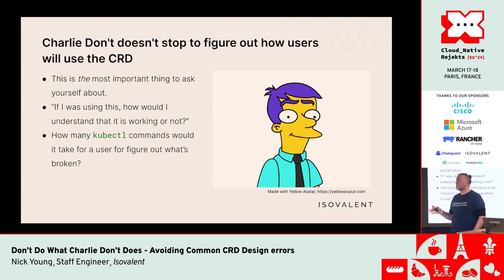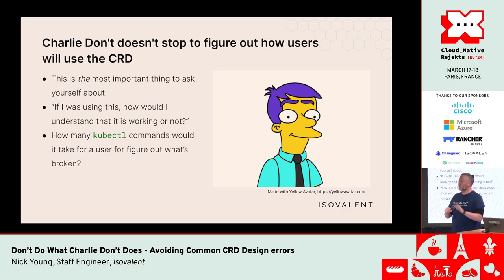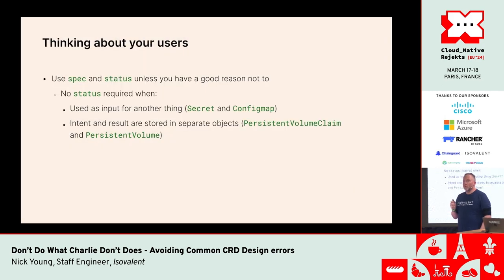Charlie Don't also doesn't stop to figure out how users are going to use the CRD. A CRD is about the people who use it — if it's not easy to use, it won't be used. Key questions: how would a user know if it's working? A useful metric is 'troubleshooting distance' — how many kubectl commands do you need to understand what's going on? The ideal is one.